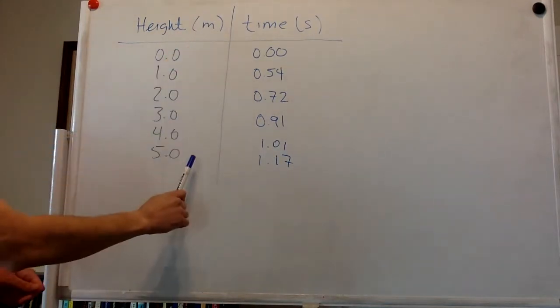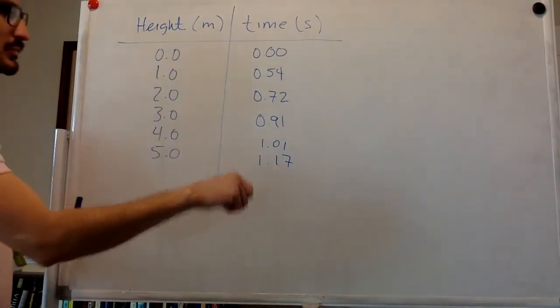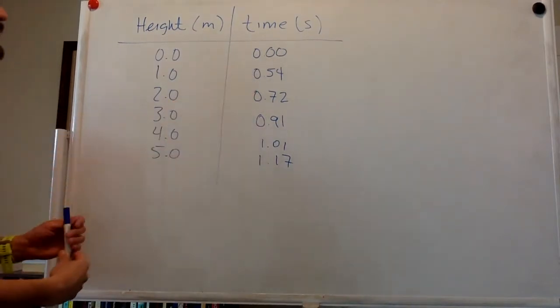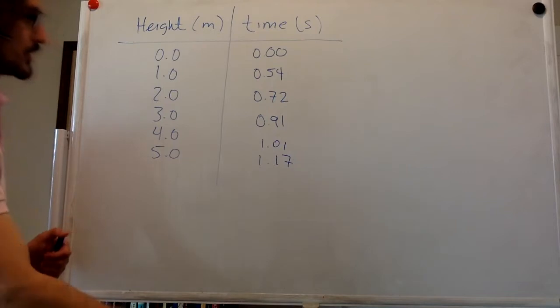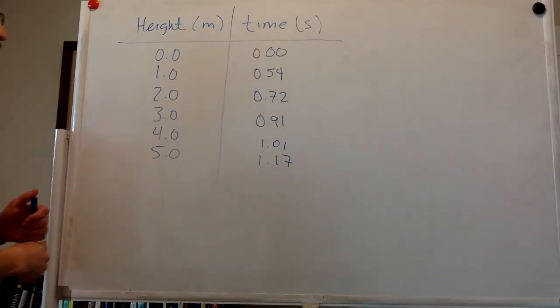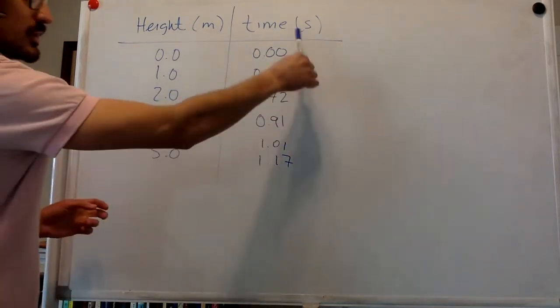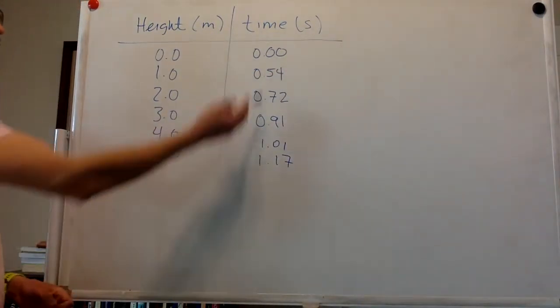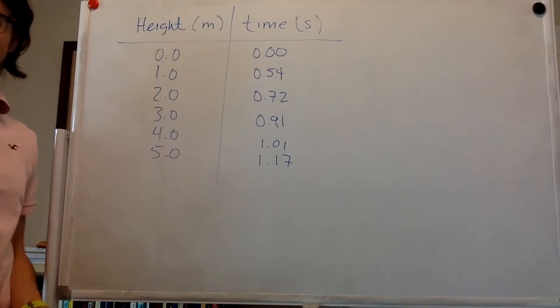So you have the height over here. You dropped from zero meters, it takes zero seconds to reach the floor. It's already there. One meter, two meters, three meters, and so on. And this is the time that it takes to reach the floor or the ground from this particular height.